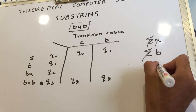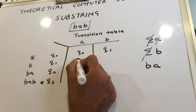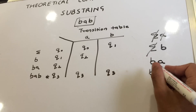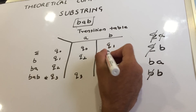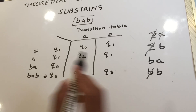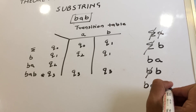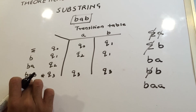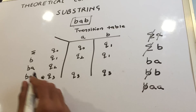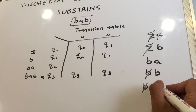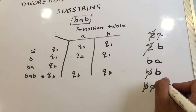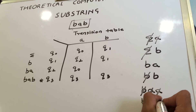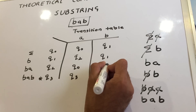For 'ba': that's state q2, so I go directly to q2. For 'bb': do I see 'bb'? No, cut one 'b' — do I see 'b'? Yes, q1. So I go to q1. For 'baa': do you see 'baa'? No, cut 'b'. Do you see 'aa'? No, cut one 'a'. Do you see 'a'? No — everything gets cut, so go to initial state q0. For 'bab': we already know 'bab' is our q3. So that cell is q3. This completes our transition table.